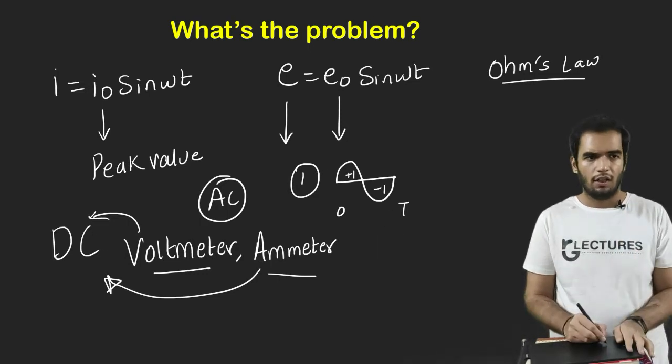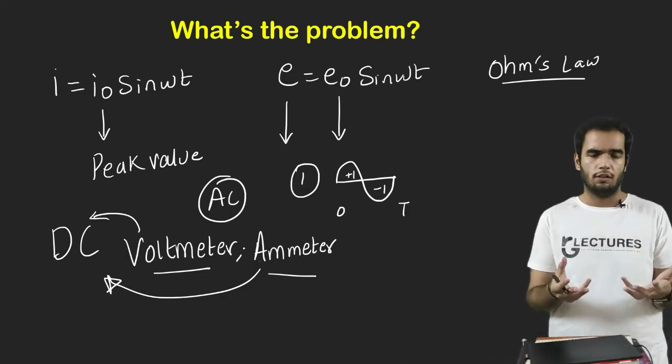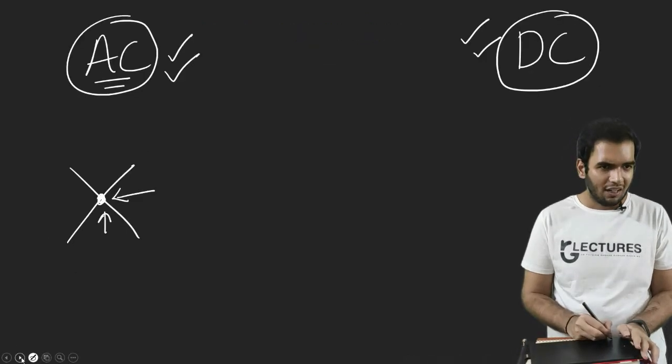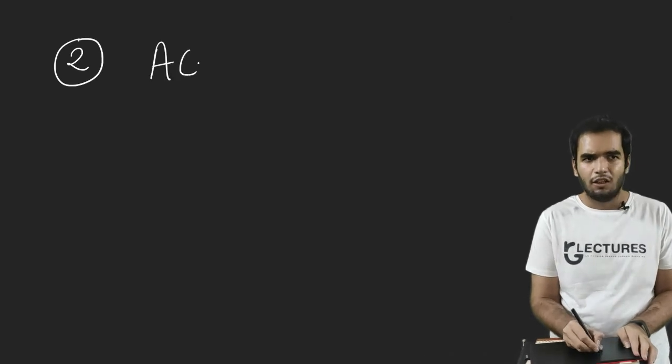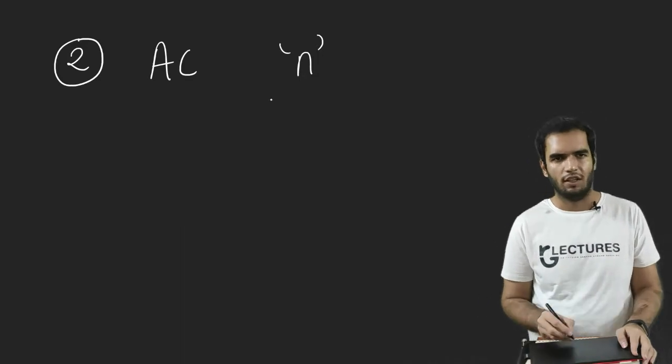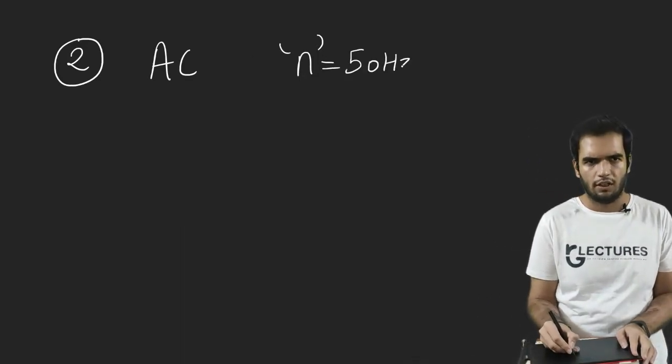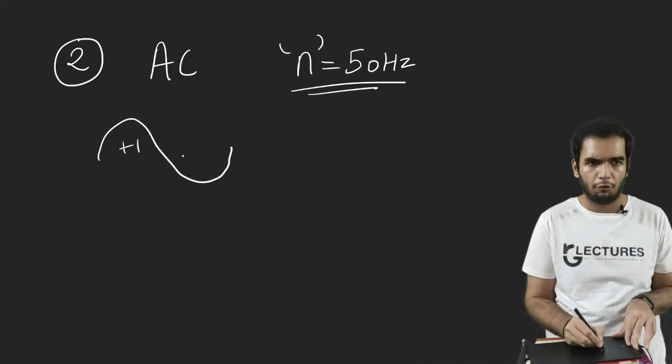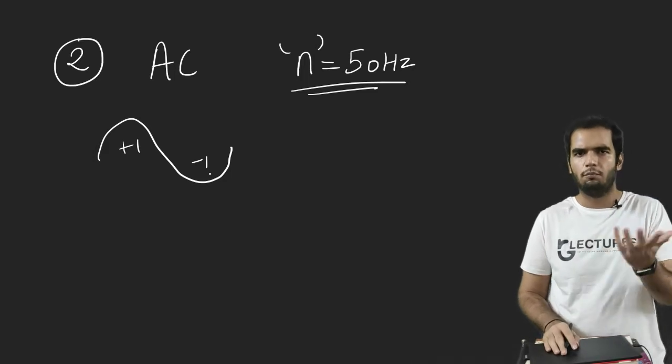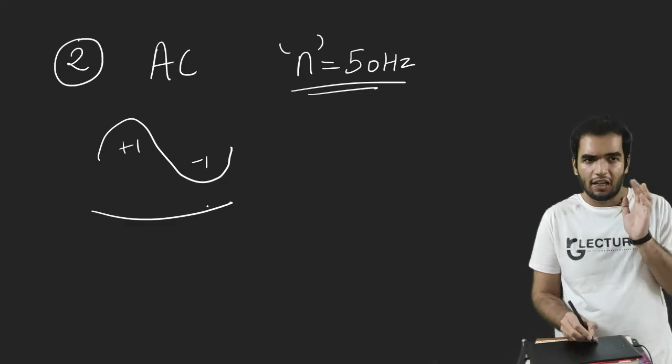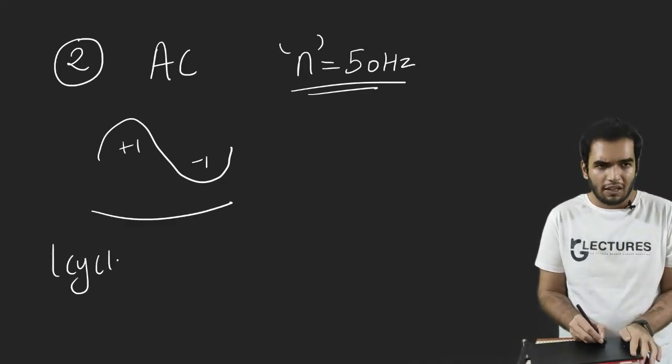E equals E0 sin omega t. So what is the average value over the cycle from zero to T? Suppose here it is plus one, so here it will be minus one. So average value is zero. Now the second reason why they cannot show the value is AC current AC voltage have a frequency. In India, the frequency is 50 Hertz.